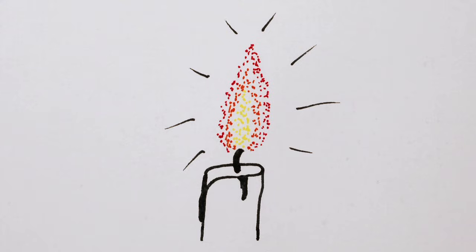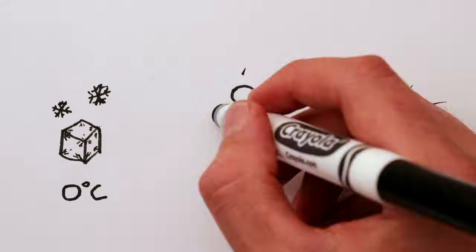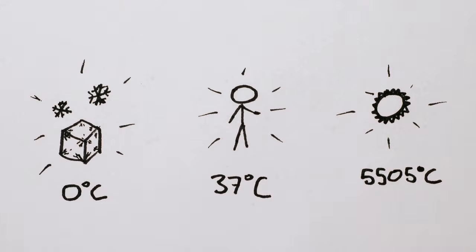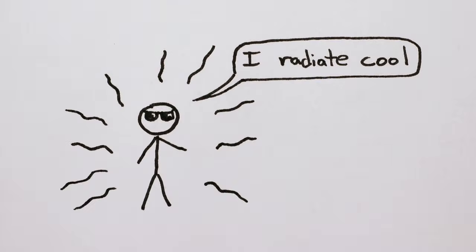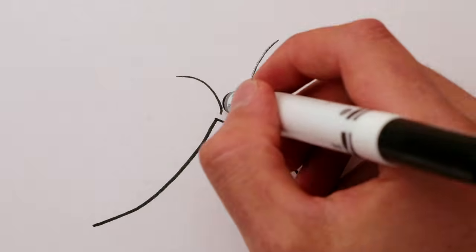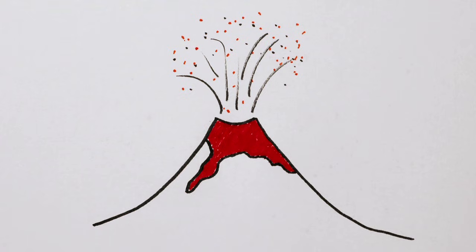So why do hot objects glow? A process called black body radiation makes all objects glow with light of a color depending on their temperature. The reason that you don't see your friends glowing, though, is because we're too cool to glow with visible light. We glow in infrared. But lava, a hot piece of iron, or soot in a flame are all hot enough to glow with that familiar red-orange light.